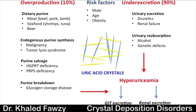Regarding urinary excretion, some diuretics lead to hyperuricemia. Renal failure leads to increased uric acid. Alcohol increases tubular reabsorption of uric acid. Remember, uric acid is excreted via the gut and the kidney, so any problem with the kidney will raise serum uric acid.